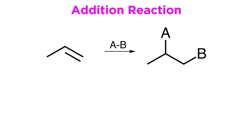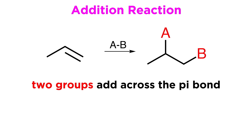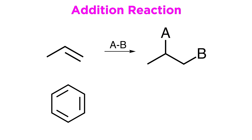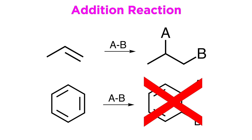We can recall that with an addition reaction, some pi bond acts as a nucleophile and attacks an electrophile. Two groups will end up adding across the double bond, and the pi bond is gone in the product. If we look at benzene, we may be tempted to think that this will react in a similar manner, since it has pi bonds. We could think that an addition reaction could occur across one of these pi bonds, but this will not be the case, and the reason for this is that benzene is aromatic.